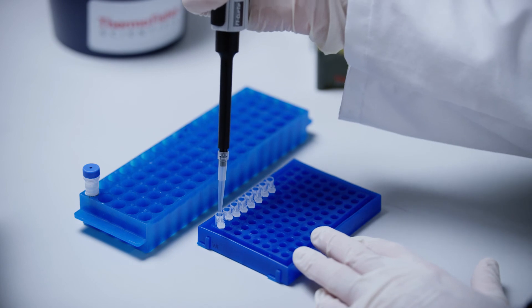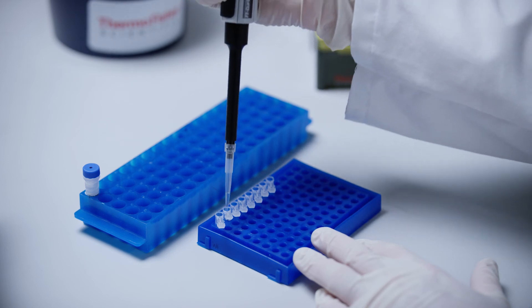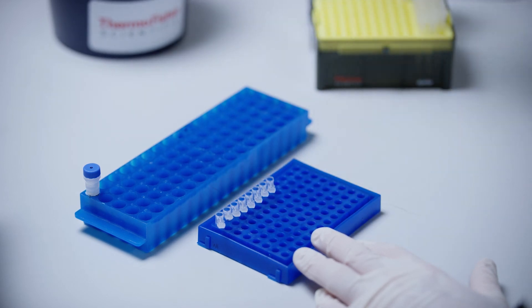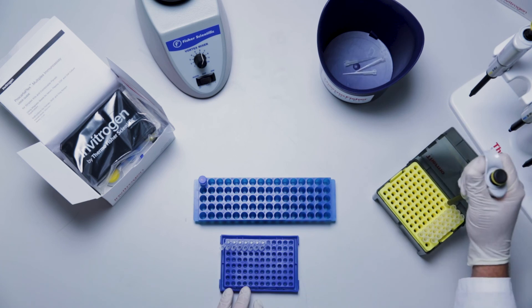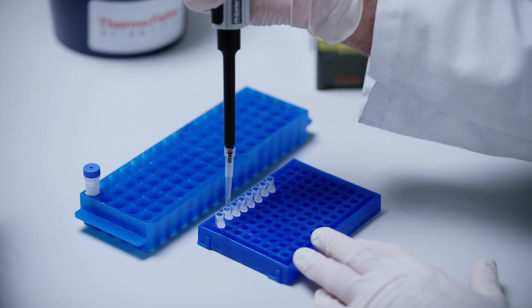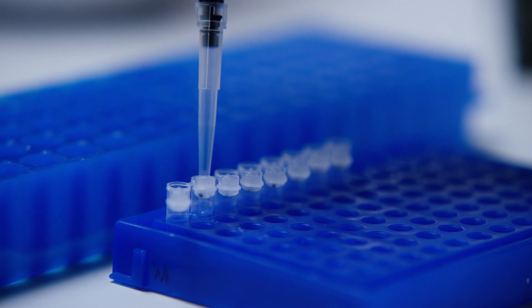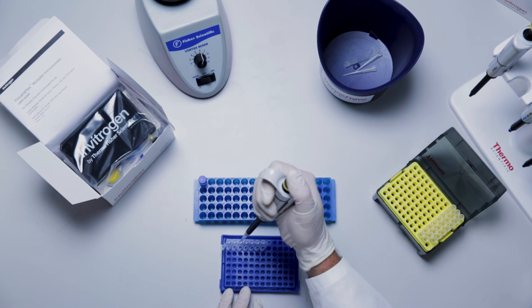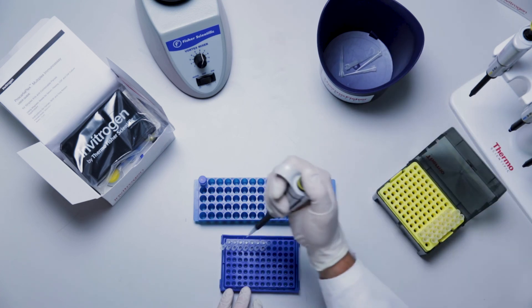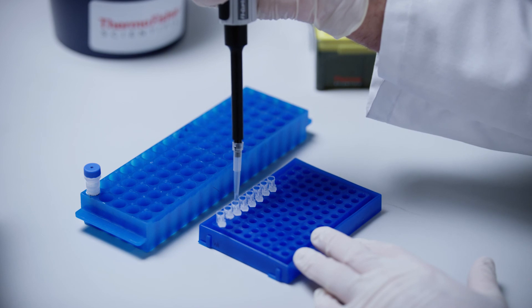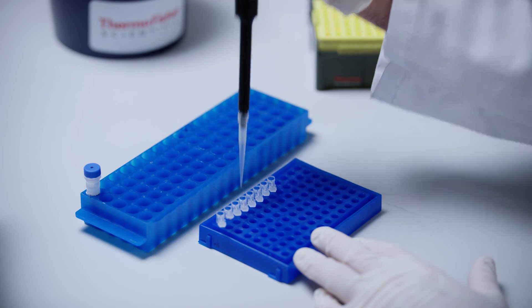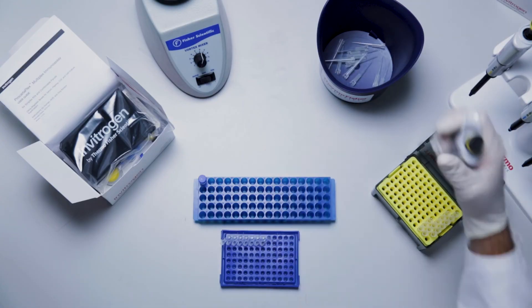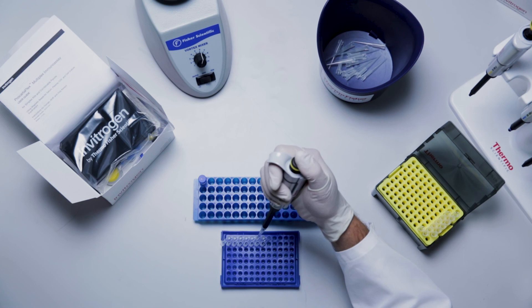Transfer 50 microliters of the mixed antigen standards from standard tube 1 into standard tube 2. Mix by pipetting up and down 10 times while changing tips between each tube. Transfer 50 microliters of the mixed antigen standard from standard tube 2 into standard tube 3. Mix by pipetting up and down 10 times. Transfer 50 microliters of the mixed antigen standard from standard tube 3 into standard tube 4 and mix by pipetting up and down 10 times. Repeat these steps for the tubes labeled standard 5 through standard 7.